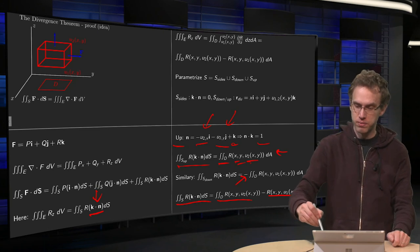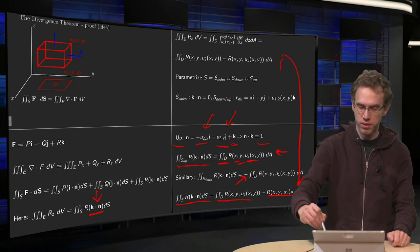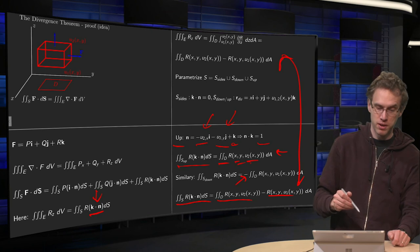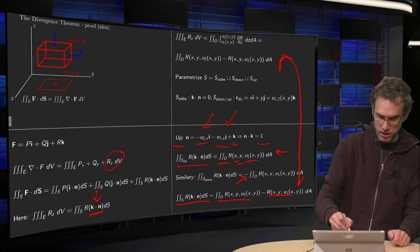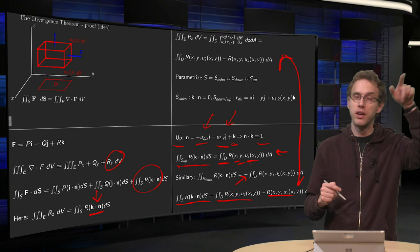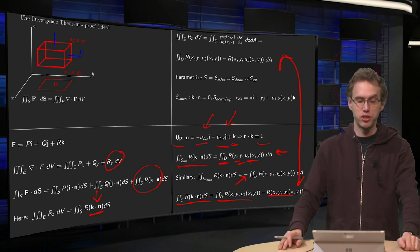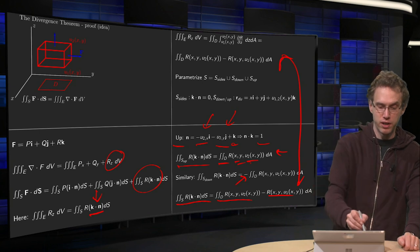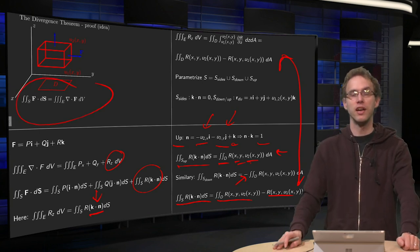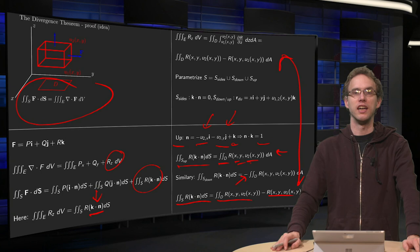And as you see, these two are exactly the same, so that's why this part equals that part. You can do the other two parts similarly. And that's why the divergence theorem holds in this easier case.